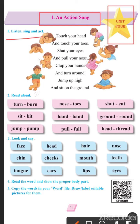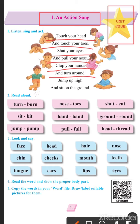Listen, sing and act. First we have to listen to the explanation, then we will sing, then we will do the action. Touch your head. Touch your toes. Shut your eyes and pull your nose. Clap your hands and turn around. Jump up high and sit on the ground.